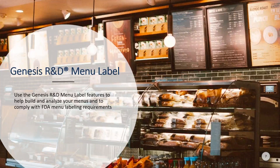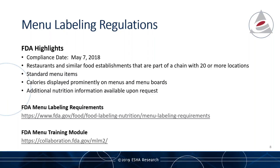I want to highlight just a few of the rules of the FDA menu labeling regulations from the most common questions we have received. The compliance date for menu labeling was May 7, 2018. Restaurants and similar food establishments — referred to as covered establishments — are those that are part of a chain with 20 or more locations doing business under essentially the same name and serving essentially the same type of menu selections. Calories must be displayed prominently on menus and menu boards, and additional nutrition information must be available to patrons upon request. You can find more resources on the FDA website and the FDA menu training module.